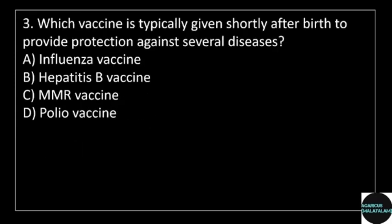3rd question: which vaccine is typically given shortly after birth to provide protection against several diseases? Answer options: option A, influenza vaccine; option B, hepatitis B vaccine; option C, MMR vaccine; option D, polio vaccine.